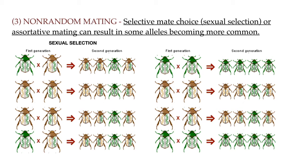Non-random mating could also be due to something called assortative mating. During assortative mating, similar types of individuals in a population mate more frequently with each other than with dissimilar types. So in this example, the green beetles only mate with green beetles and the brown beetles only mate with brown beetles.